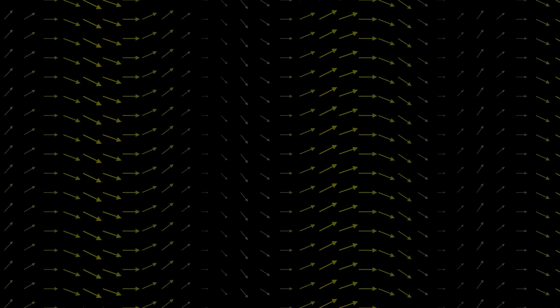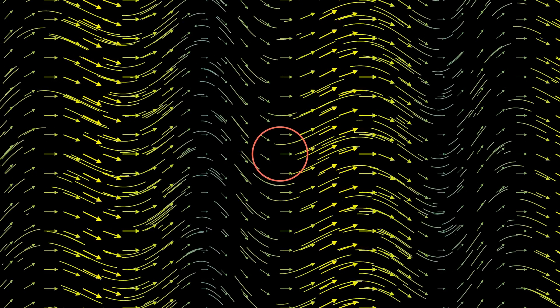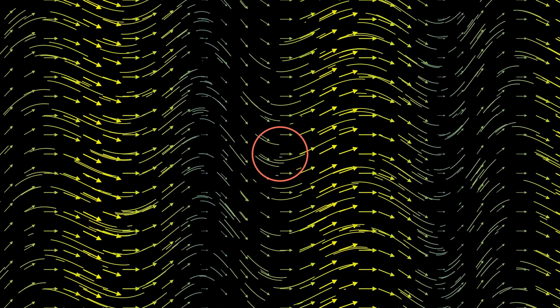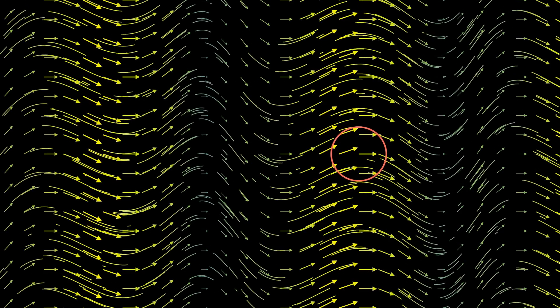This is a vector field. It's useful to imagine it as a current of water or fluid, where the size of the vectors at each point signifies how fast the fluid is moving there. At this point, the water is moving slowly since the arrows are small. Here, it's moving faster since the arrows are larger.